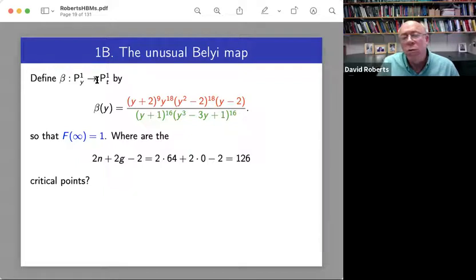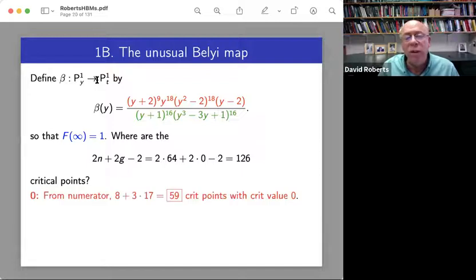All right, but if I want to explain to you why it's a Belyi map, I have to find all 126 critical points. So where are they? Well, most of them are obvious. So from the numerator, maybe we can focus right here.